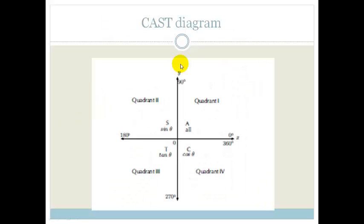Remember the CAST diagram. Basically, we have this coordinate plane where we go anti-clockwise: 0, 90, 180, 270, 360 degrees. This is quadrant 1, quadrant 2, quadrant 3, and quadrant 4. The reason it's called the CAST diagram is because of CAST.